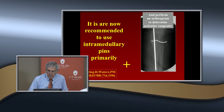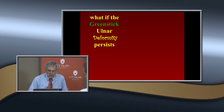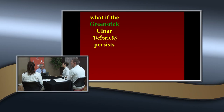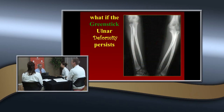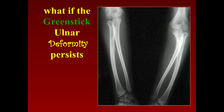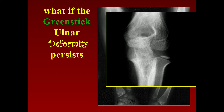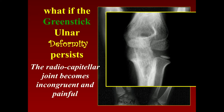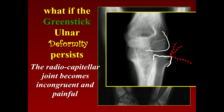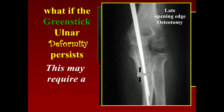You also perform an arthrogram to determine articular congruity. Here's a patient who had a type 3 treated with a cast and came back. He had an incongruous joint and was having pain — every time he'd rotate he was having pain because of an incongruous joint. The only way to correct this was with an opening wedge osteotomy. Probably would have been better to put a plate on it, but we put a couple of pins and a bone graft. Now we've re-established the congruity.